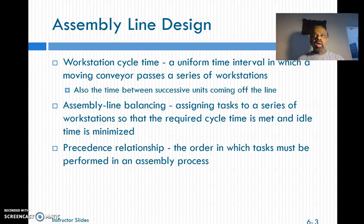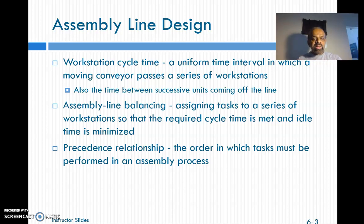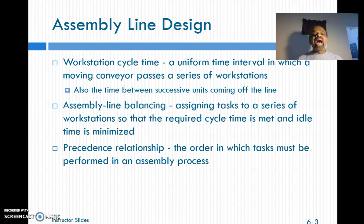The first thing we're going to talk about is what is called a cycle time — a workstation cycle time. A cycle time is the time interval in which the conveyor belt moves from one station to another, basically the time between successive units coming off the line. We use this cycle time to find out how many workstations to design, and then we balance the assembly line — making sure the cycle time is met and the idle time is minimized.